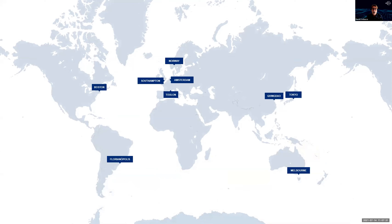Nortek has nine subsidiaries around the world. We are headquartered in Norway, just outside of Oslo. Throughout our subsidiaries we do product sales, support, and some development as well. The latest addition to the family is our office here in Del Mar, which we just opened recently — we'll be doing advanced product development here.